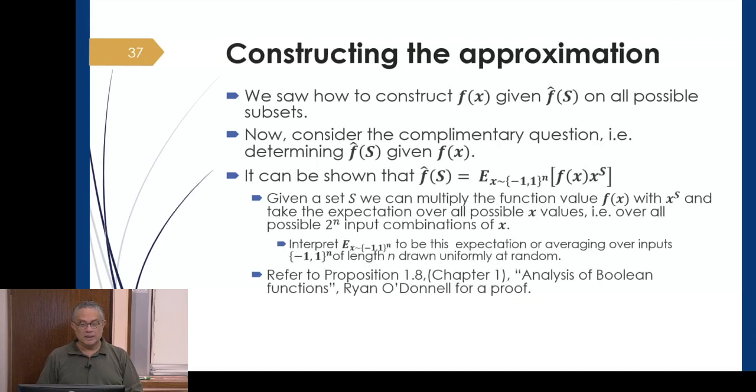In words, given a set s, we multiply the function value f(x) with χˢ or χˢ(x). Take the expectation over all possible x values—2ⁿ of them—and you have a perfect estimate of f̂(s). The symbol E with subscript x∈{-1,1}ⁿ is shorthand for the expectation or averaging over inputs of length n drawn uniformly at random.